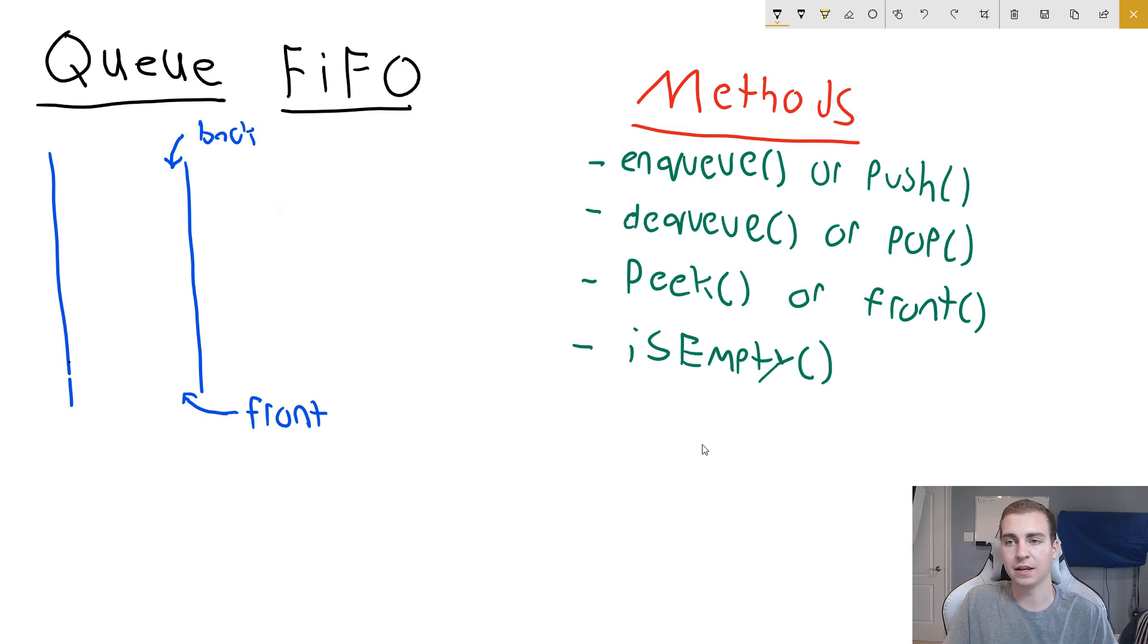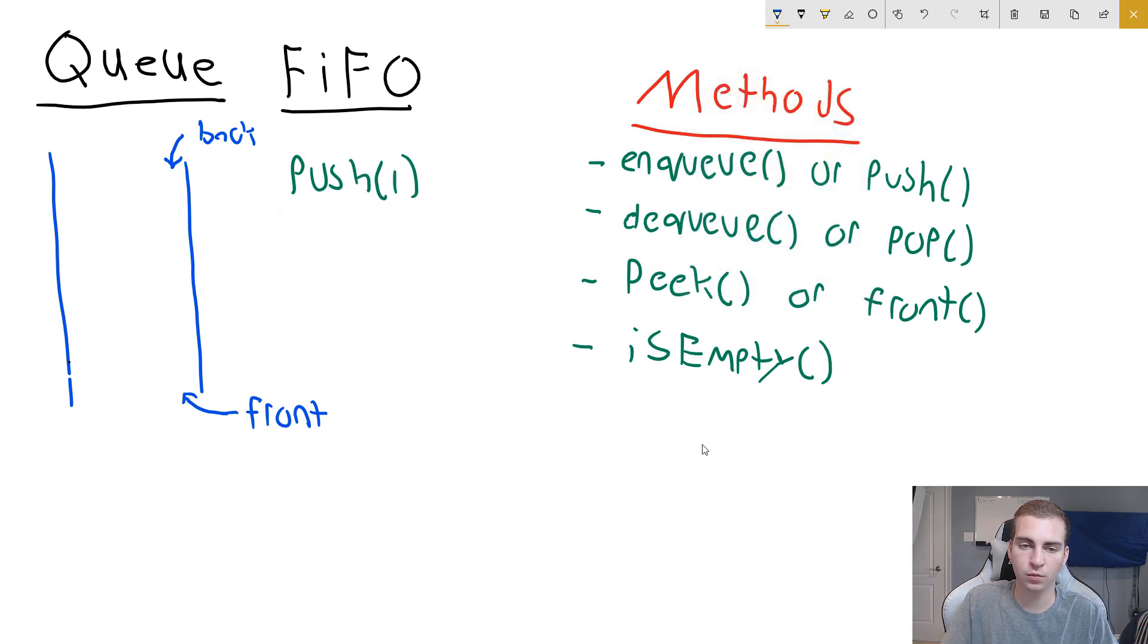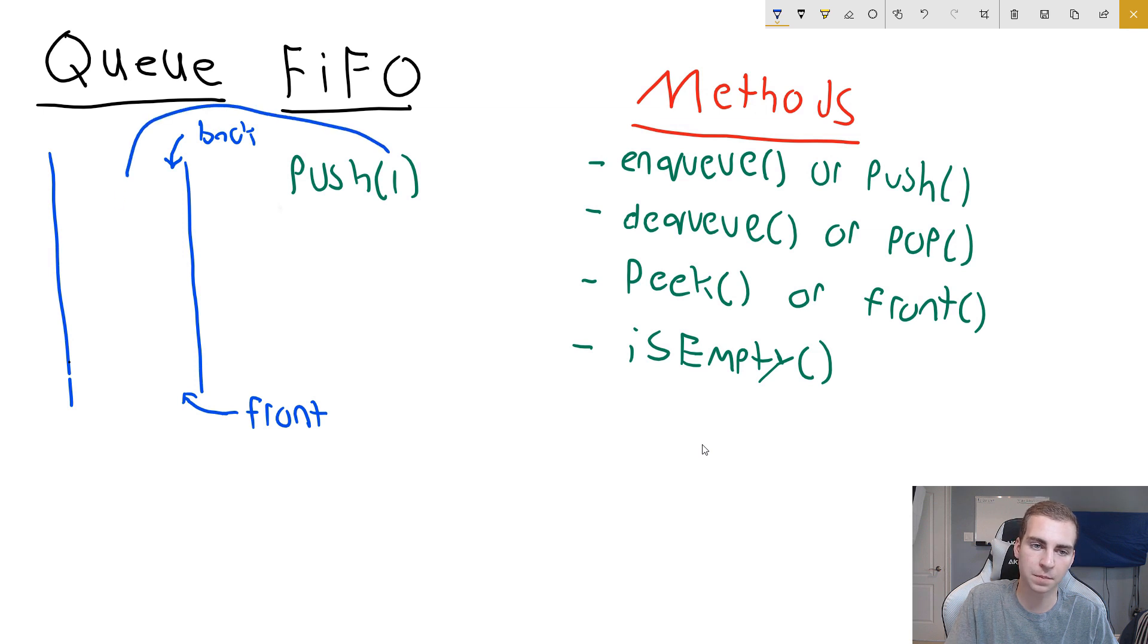So if we want to add an item to our queue, regardless of if it's full or not, all we have to do is use one of the methods, which is enqueue or push. This stands for add an item to the queue. These methods mean the same thing. It's just sometimes they're different names based on what language you're using. But I'm going to push the item one onto our queue. So if I do that, what happens is one will come in from the back of our queue and it will go as far as it can. So in this case, it's going to go right to the front.